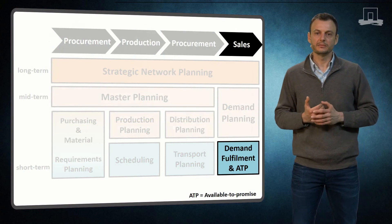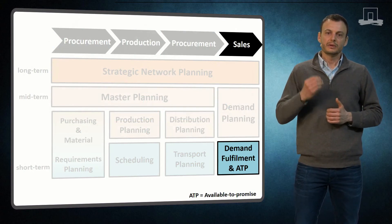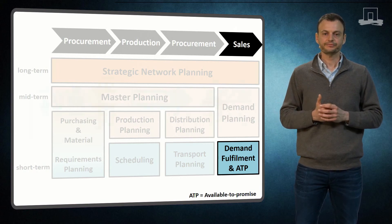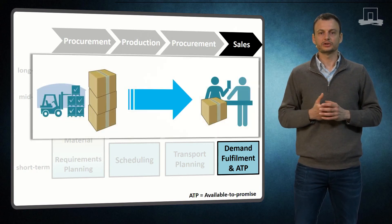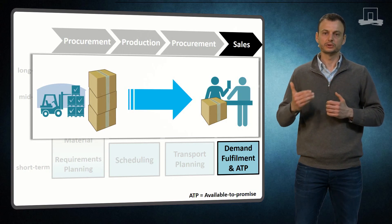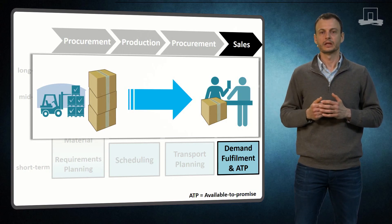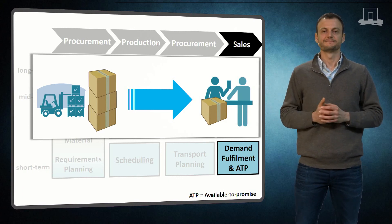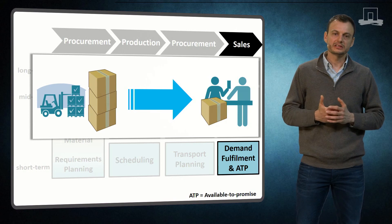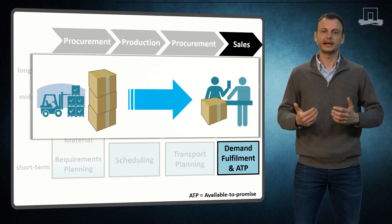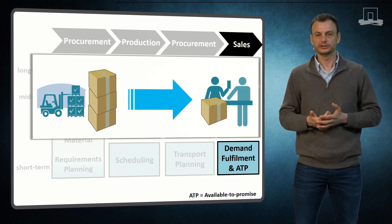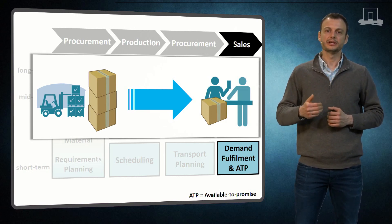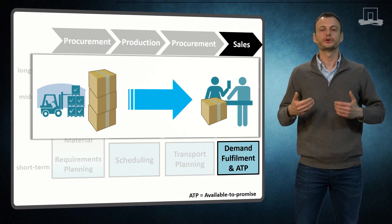The interface of supply chain management to customers is the demand fulfillment and available to promise component of the supply chain matrix. Here we track customers' orders from order entry via order execution to order delivery. Order promising, due date setting, and shortage planning are also considered. Order promising starts with matching available inventory and expected supplies with already committed customer orders. Remaining quantities are the available to promise quantities that can be used for promising due dates for new incoming orders.